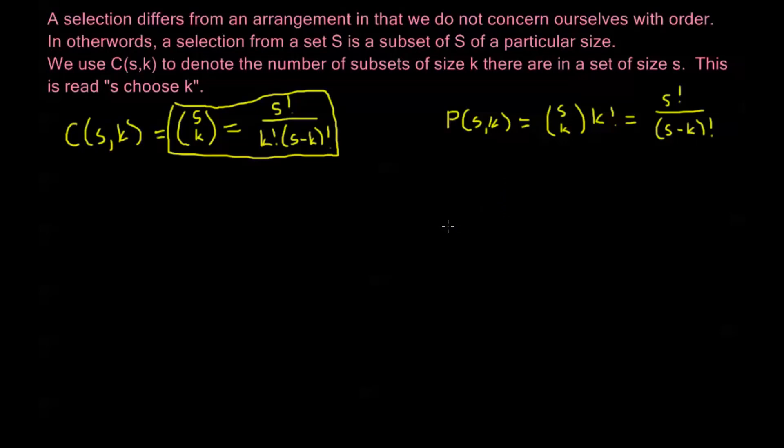Now a couple other little properties: we define 0 factorial to equal 1. So if I look at something like S choose 0, this is going to be S factorial over 0 factorial times S minus 0 factorial, which is S factorial, this would be 1 over 0 factorial or in other words just 1.